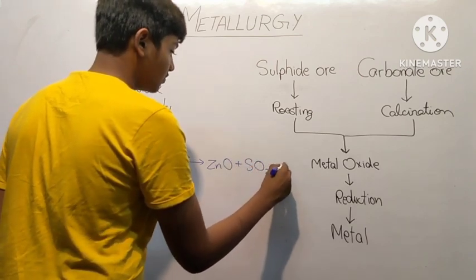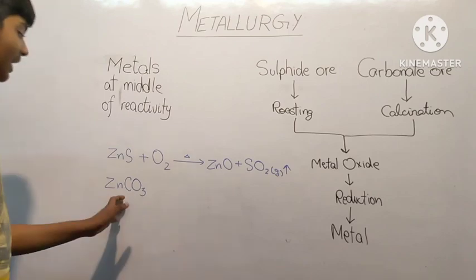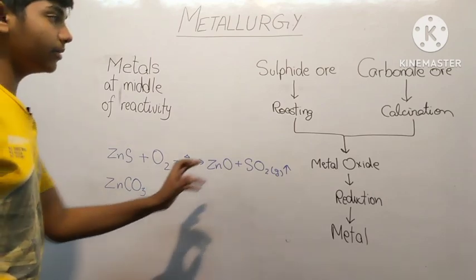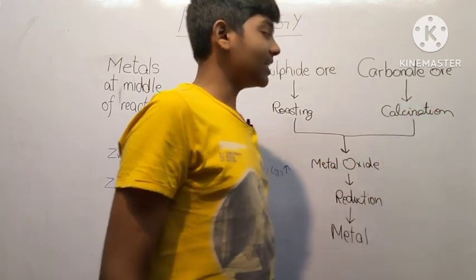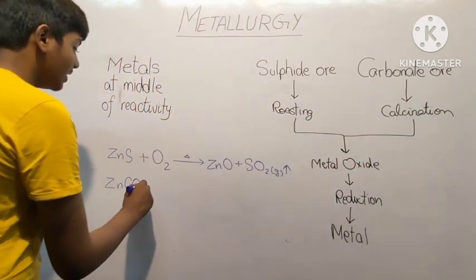Next is our carbonate ore, which is zinc carbonate. For converting zinc carbonate to metal oxide we need to perform calcination. So calcination is heating in the absence of air.